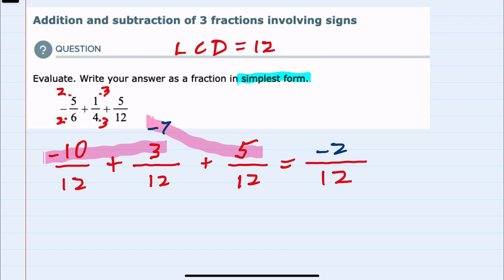Simplifying our fraction, both the numerator and the denominator are divisible by 2. So we can simplify to have negative 1 in the numerator, 6 in the denominator, so negative 1 sixth is our solution.